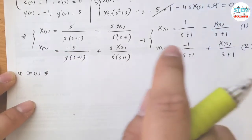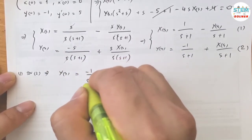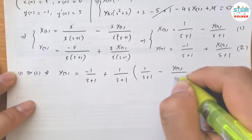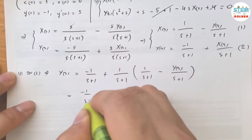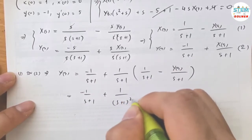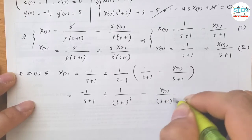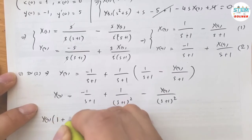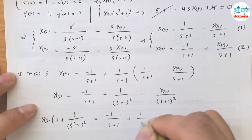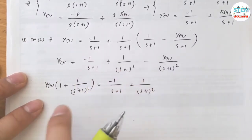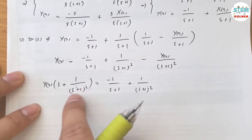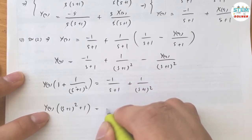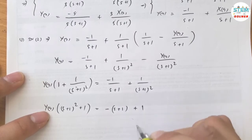Plugging 1 into 2, I have Y of s equals negative 1 over s plus 1, plus 1 over s plus 1 times this expression. Now capital Y of s is on both sides — move it to one side and collect terms. Rewrite everything on the right side, then multiply by s plus 1 squared to clear the fractions. So I have s plus 1 squared plus 1 equals negative s plus 1 plus 1.